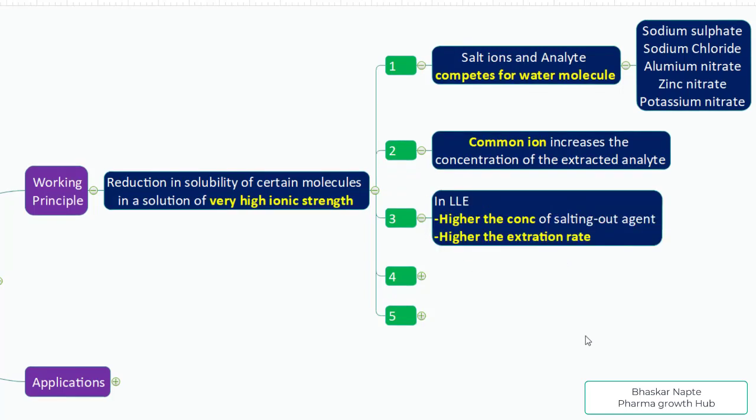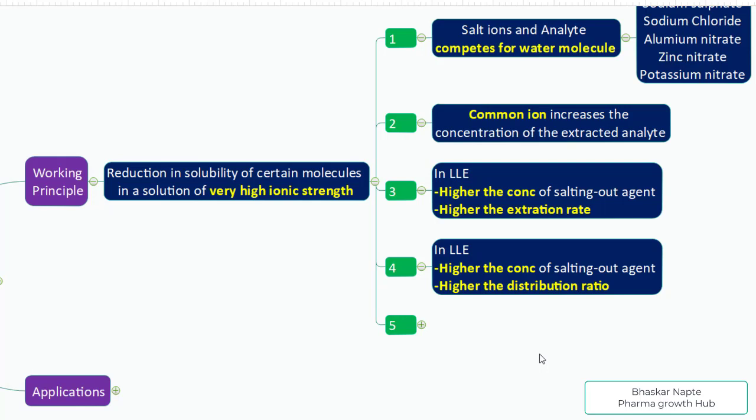The third important point is that in liquid-liquid extraction, higher the concentration of salting out agent, higher is the extraction rate. The concentration of salting out agent is very important — it cannot work at low concentration levels; it must be at the concentration level where precipitation of the analyte can be seen. Further increasing the concentration of salting out agent will further increase the extraction rate of your analyte into the organic layer.